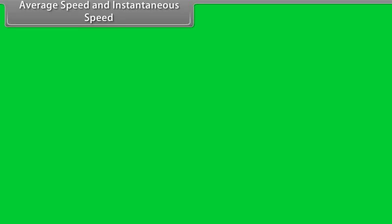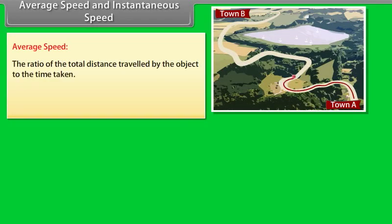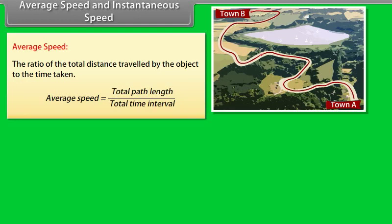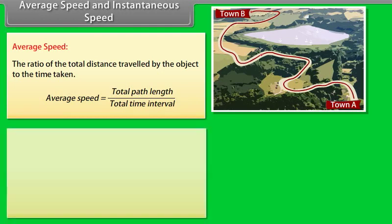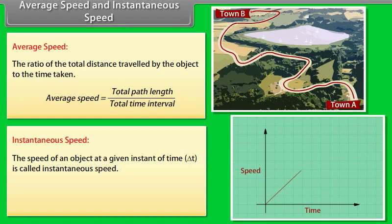Average speed and instantaneous speed. Average speed: the ratio of the total distance traveled by the object to the total time taken. Therefore, average speed equals total path length divided by total time interval. Instantaneous speed: the speed of an object at a given instant of time is called instantaneous speed.